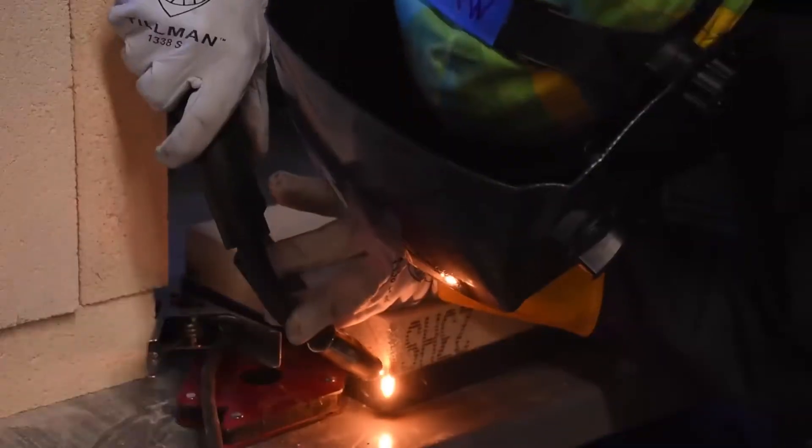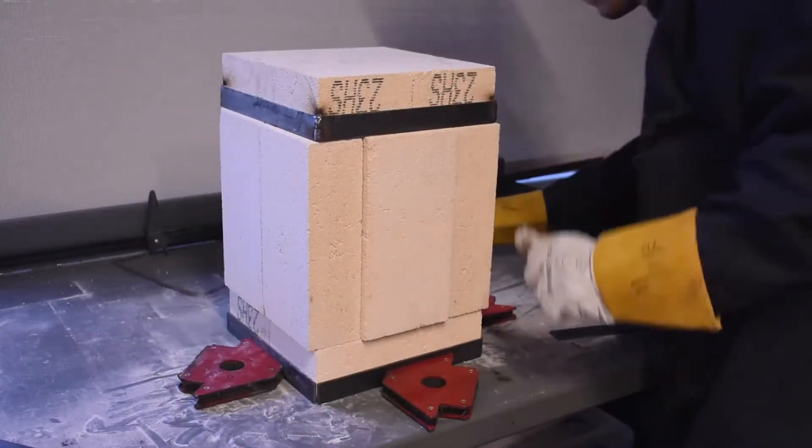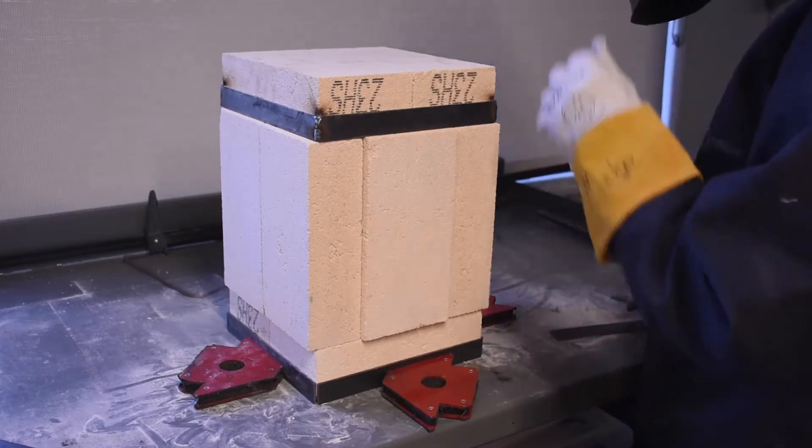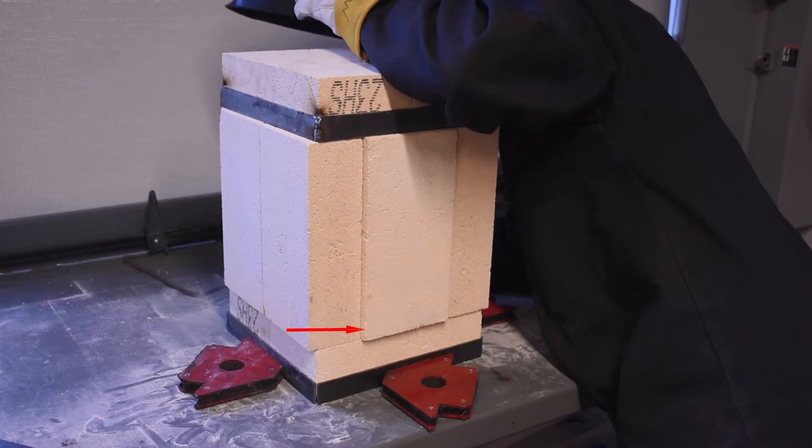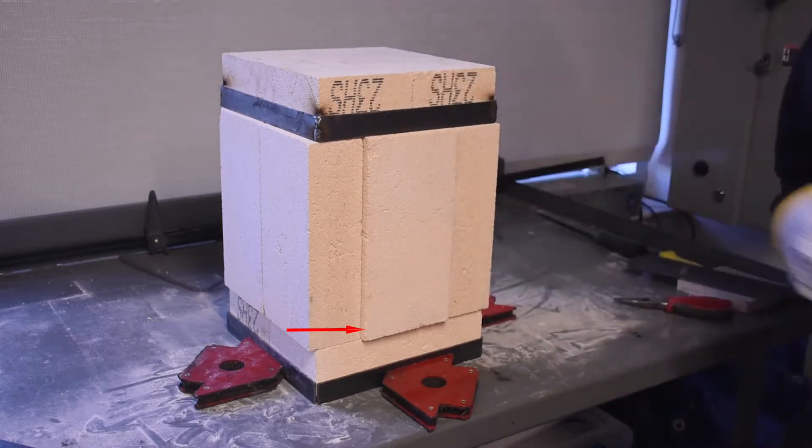Now the odd thing is that the bricks are nine by four and a half by two and a half. This means that I'd have a rectangular space and I really wanted a square one. So I moved two of the bricks out a quarter inch so I'd have an internal space four and a half inches square and nine inches tall.